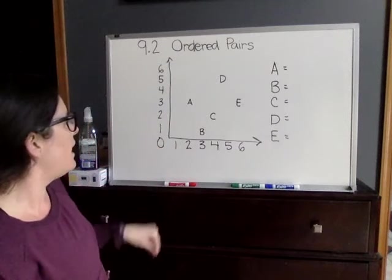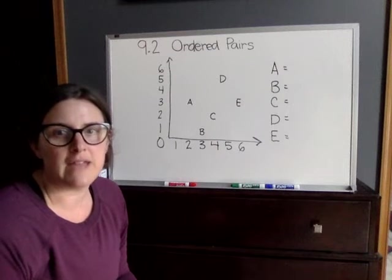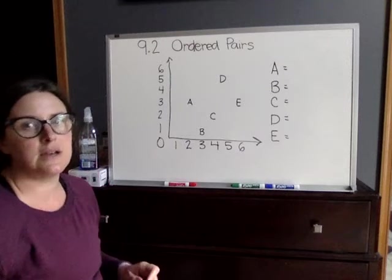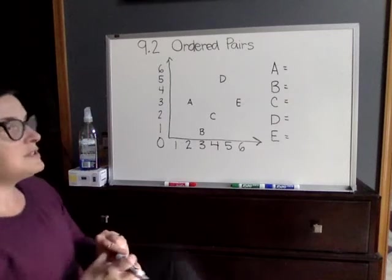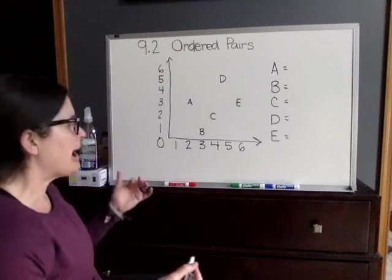So it's only going to go up to six on each side on the x-axis and the y-axis. So the most important part of what I want you to get out of this is knowing where the axes are.